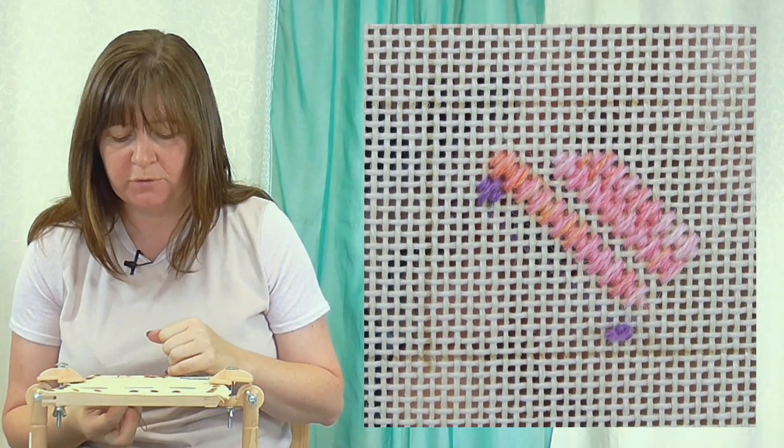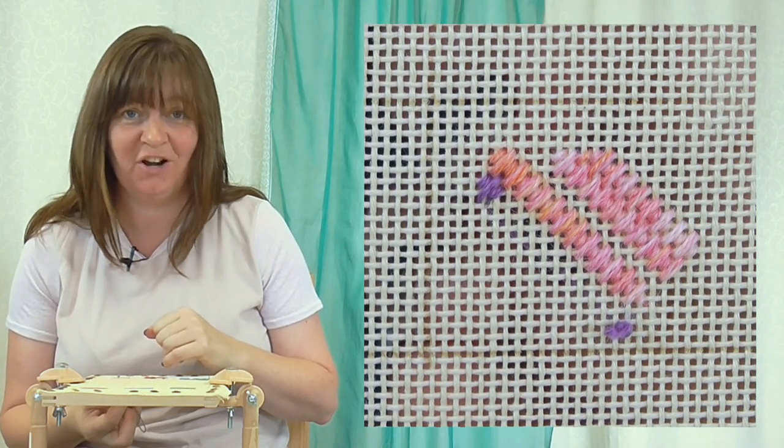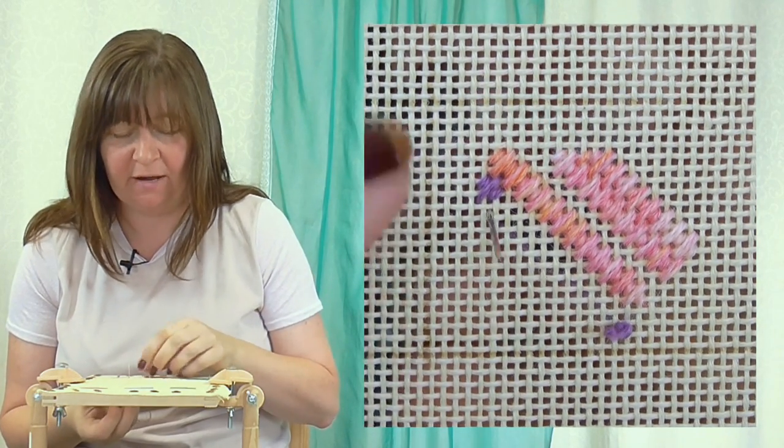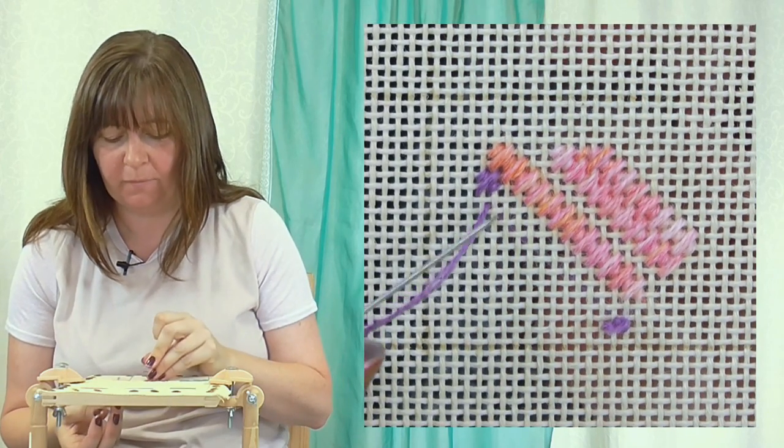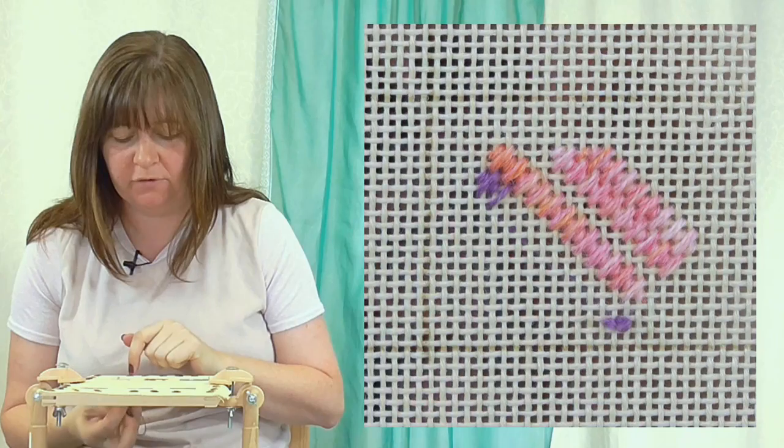There's my short stitch, so now it goes short stitch, long stitch, short stitch, long stitch. Now I'm going to put my long stitch in—one, two, three—it meets the short stitch of the previous row.